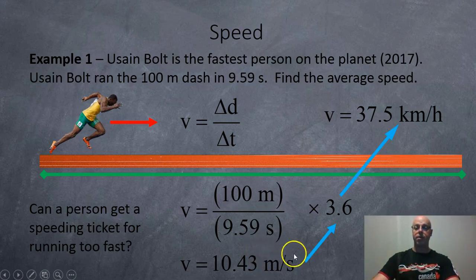And if you want the common units for that, we're just going to multiply by that magic number I mentioned before, 3.6. And we get a final answer of 37.5 kilometers per hour. So, that means Mr. Bolt is not going to get a ticket for running too fast in front of a school zone.